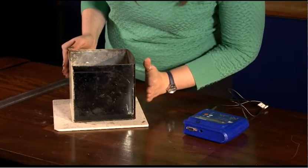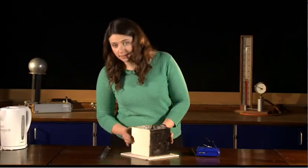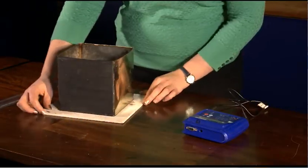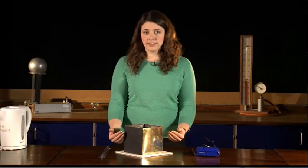So you can see here that I have a shiny black side and a shiny white side, and if I turn it around you can see that there's a copper side and a matte black side.